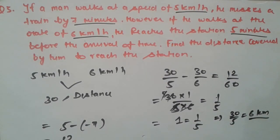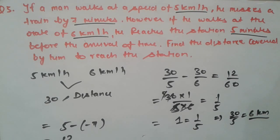So friends, it is easy when only speed is given — we just take the LCM of the speeds and assume that number as the total distance. Then we can calculate whatever we want. Let's move to the next question.